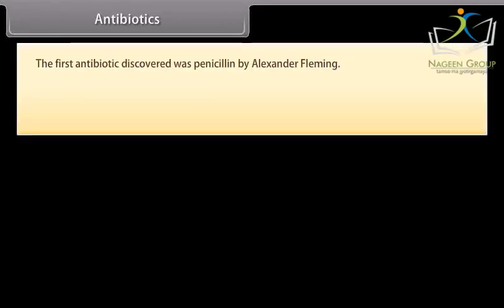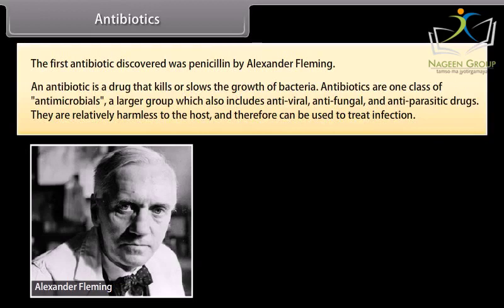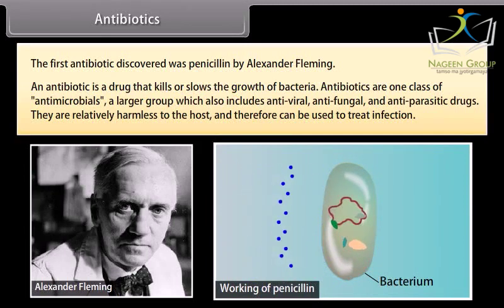Antibiotics. The first antibiotic discovered was penicillin, by Alexander Fleming. An antibiotic is a drug that kills or slows down the growth of bacteria. Antibiotics are one class of antimicrobials, a larger group which also includes antiviral, antifungal, and antiparasitic drugs. They are relatively harmless to the host and therefore can be used to treat infection. Penicillin works by preventing the production of peptidoglycan, the substance that forms the cell wall. This means the cell will continue to grow without dividing or developing a new cell wall, so the wall gets weaker and eventually ruptures.